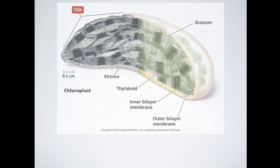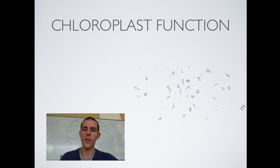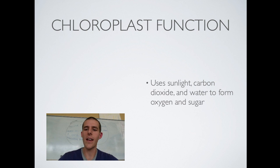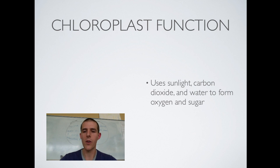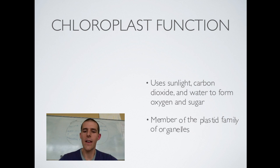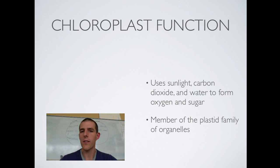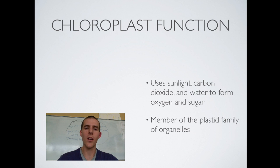As for what chloroplasts do — they perform photosynthesis. They take sunlight, carbon dioxide, and water and form oxygen and sugar. We'll have a detailed video on exactly how that happens later on, but for now know: sunlight, carbon dioxide, and water in; oxygen and sugar out. Chloroplasts are also a member of a family of organelles found only in plants, known as plastids. Just know that plants have their own special set of organelles known as plastids, and chloroplasts are one of them.